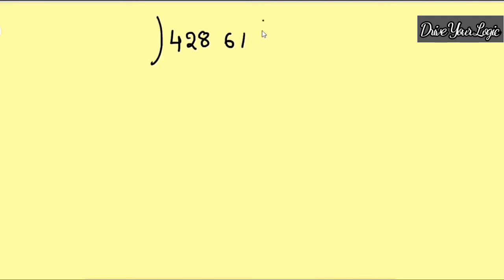Now let's take a big dividend. You have to divide 861 by 11. Now the trick I'm telling you — be careful of this trick. Here we have a two-digit divisor. Now there are lots of short tricks, but in school exams you can't use short tricks. So the correct process: just look at the digits. This is two digits and the divisor is also two digits, so we can take two digits at a time. But if the number is smaller than the divisor, you have to take three digits.